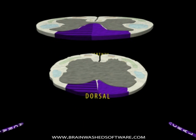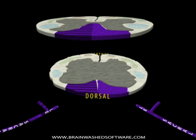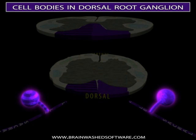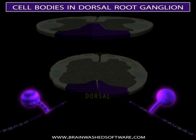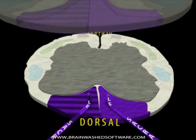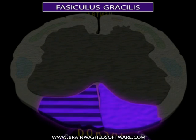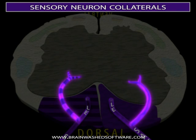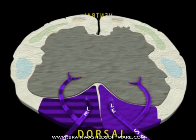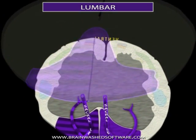Cell bodies of sensory neurons from either proprioceptors or exteroreceptors reside in the dorsal root ganglion. Sensory neurons from the lower extremities enter the spinal cord and ascend in the dorsal columns in a bundle known as fasciculus gracilis. Collateral branches of these sensory axons enter the dorsal horns, where they synapse with interneurons that mediate reflex activity, such as the stretch reflex.